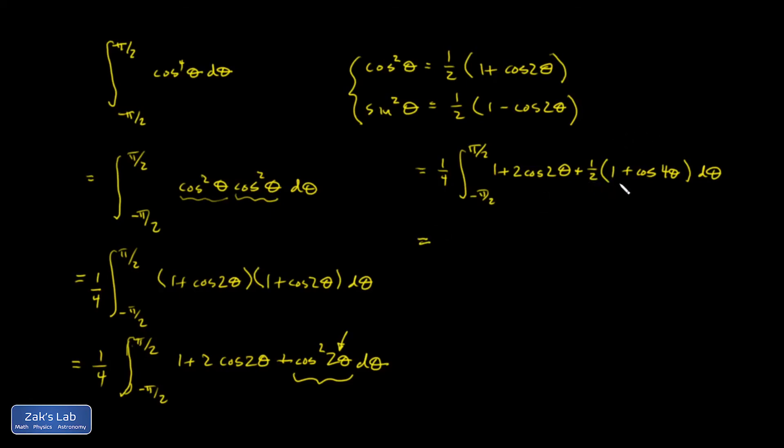I could divide each of these terms by one-half and multiply by one-half out in front, just trying to get rid of that fraction. So I end up with 2 plus 4 cosine 2 theta plus 1 plus cosine 4 theta d theta.